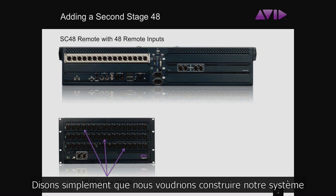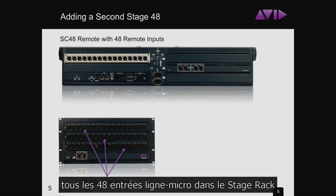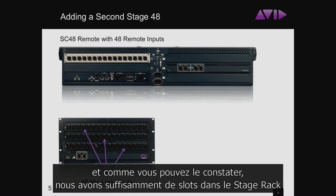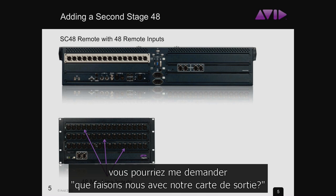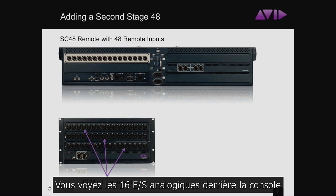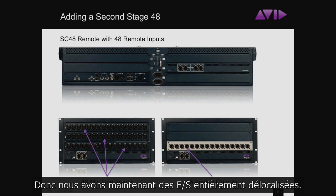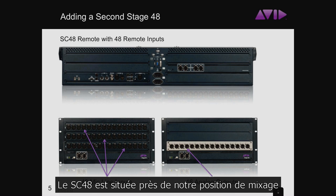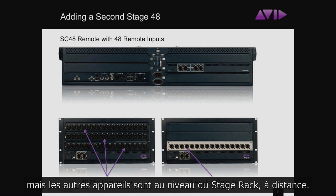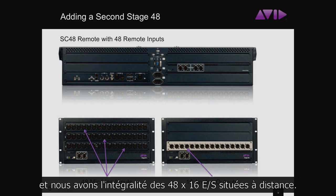If we wanted to lay out our system differently, one possibility is to locate all 48 mic line inputs remotely into the stage rack. We only have enough slots for three cards in the stage rack, so if we fill it up with inputs, we could continue using the output card locally, or add a second stage rack to move outputs down to the stage as well. Now we have an entirely remote architecture — the SC48 is local to our mixing position while all I/O is at stage level.